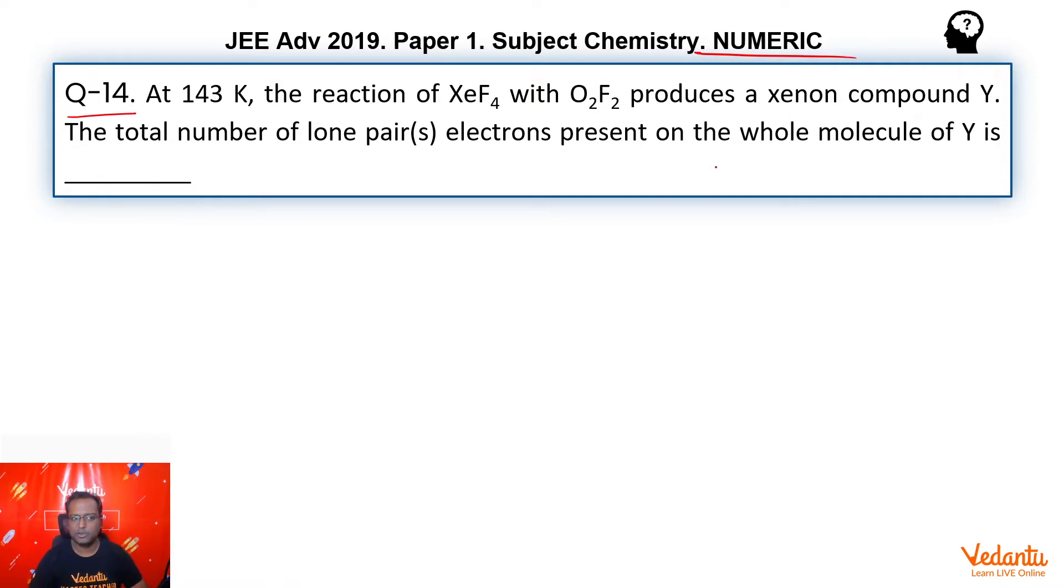This is numeric type question. Generally, numeric type question of inorganic are very simple. Question says we have XeF4 and we react it with O2F2 at low temperatures. Why low temperature? Because O2F2 and XeF4 both are unstable. He says it produces Y, and then he is asking questions about Y.